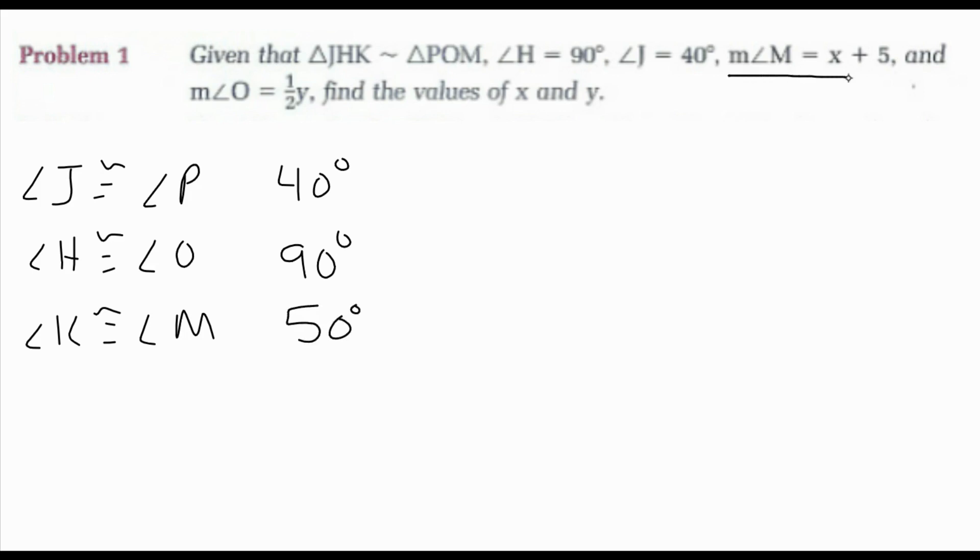I know that measure of angle M is X plus 5. Well, the measure of angle M is 50, so X plus 5 will equal 50, making X 45.